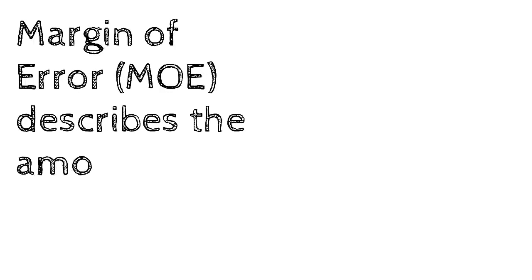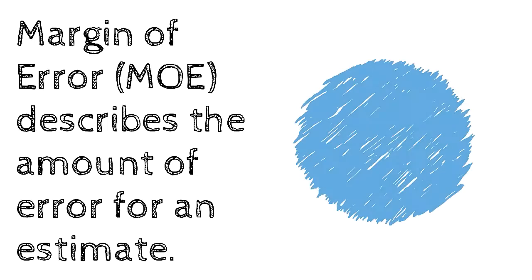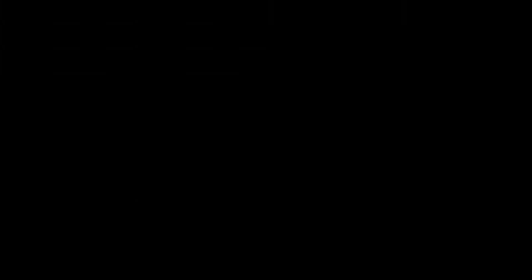A margin of error describes the amount of error for an estimate as a result of sampling a population instead of taking a census. If you only sample a part of the population, the sample will almost never perfectly describe the entire population, which is also known as the universe. The difference between the sampled population and the entire universe is described using the margin of error.